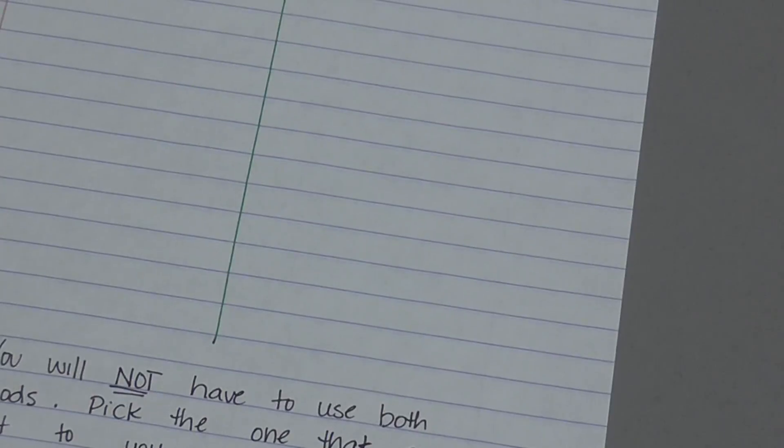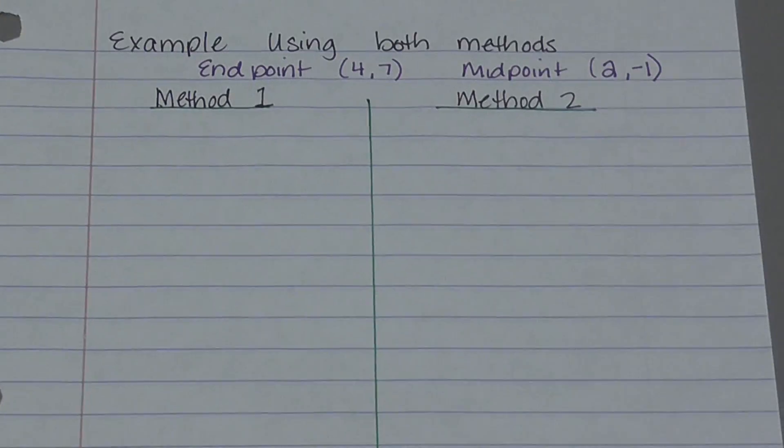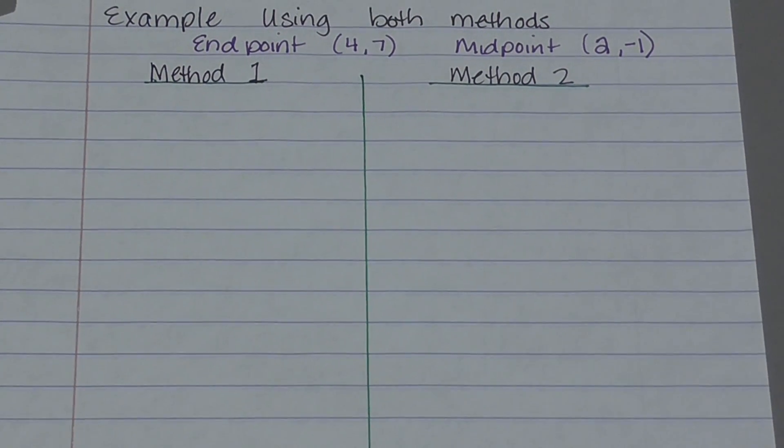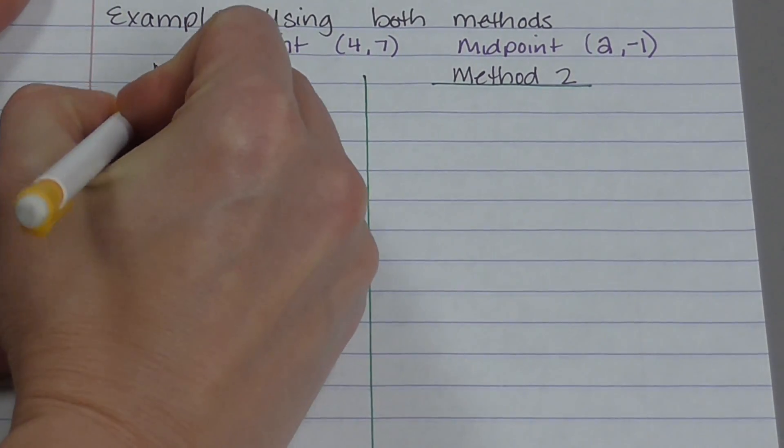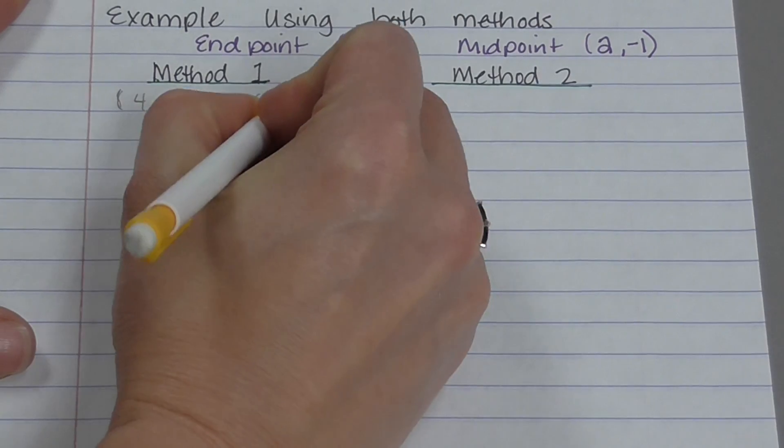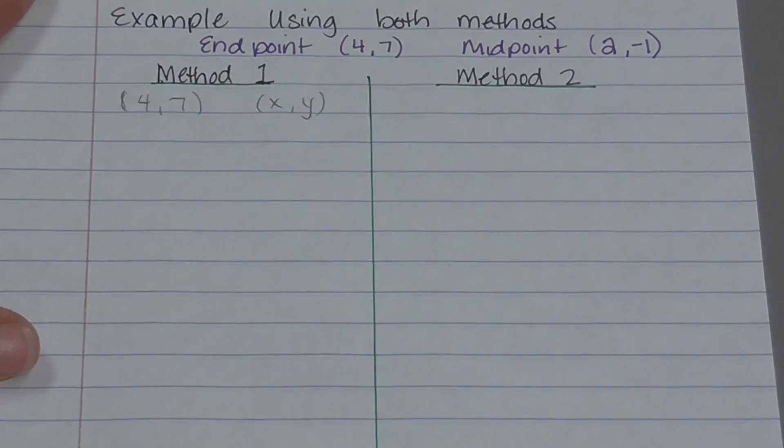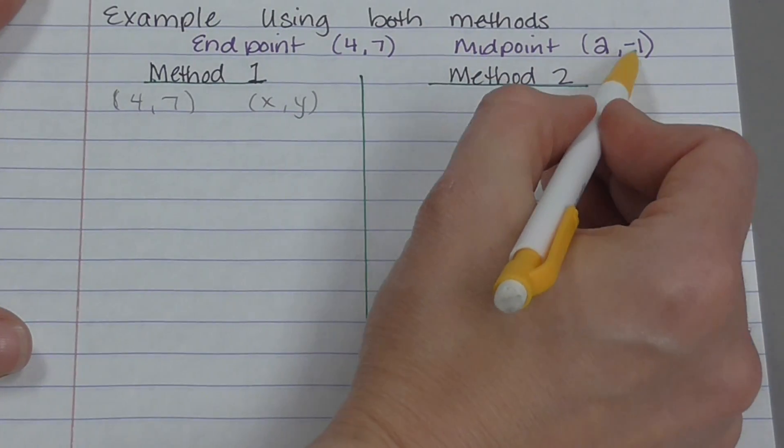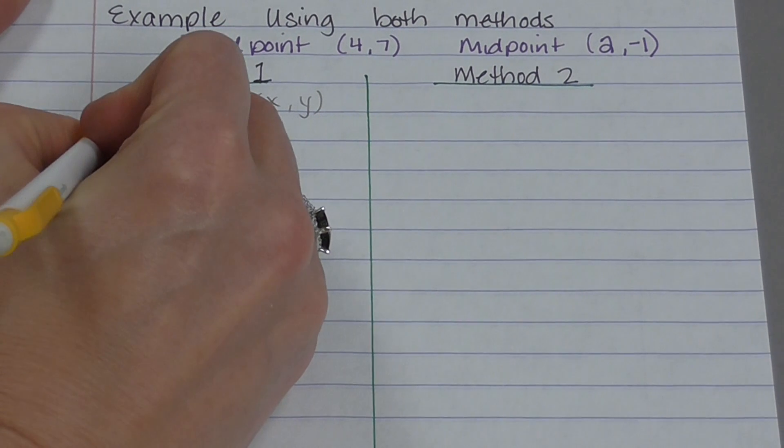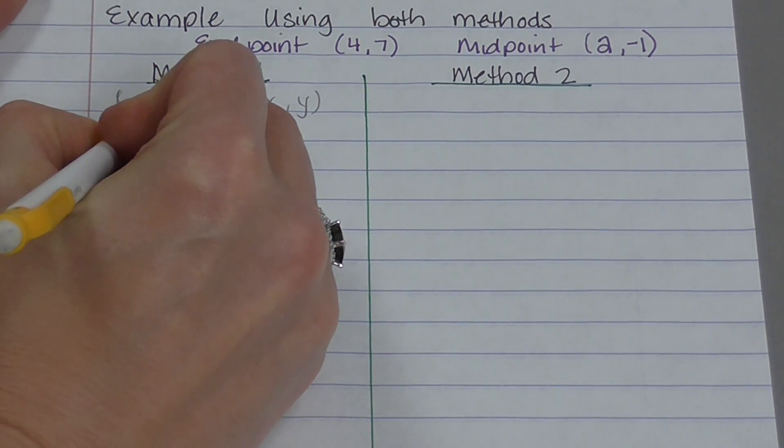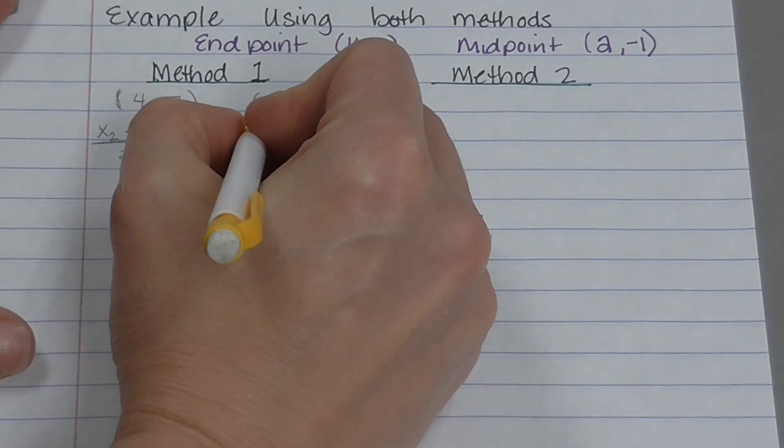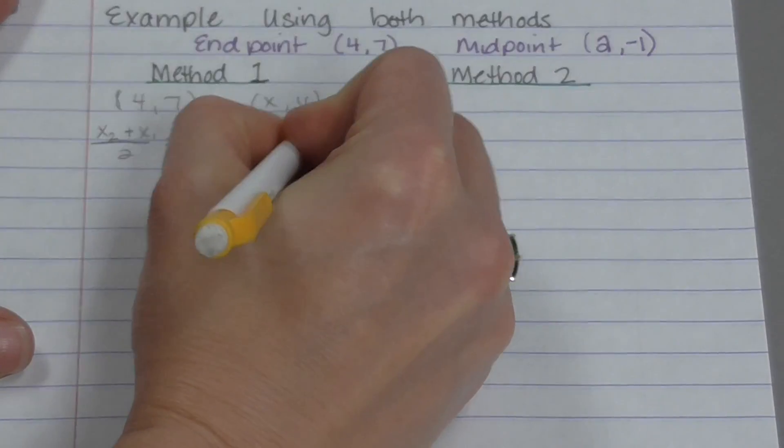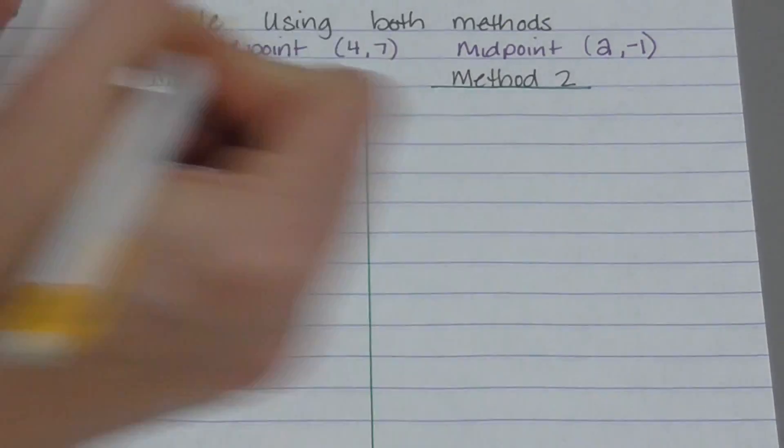So just to show you another way, another example of using both method 1 and method 2. I'm going to start with an endpoint at 4, 7. So one endpoint is 4, 7. And my other endpoint is an unknown x and an unknown y. And it gives me a midpoint of 2, negative 1. So I'm going to set it up. Using my midpoint formula, it's x sub 2 plus x sub 1 over 2 has to equal 2. And y sub 2 minus y sub 1 over 2 has to equal negative 1.